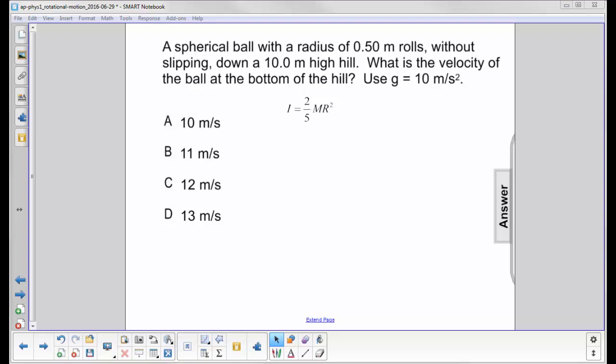A spherical ball with a radius of 0.50 meter rolls without slipping down a 10 meter high hill. What is the velocity of the ball at the bottom of the hill? Use g equals 10 meters per second squared. The moment of inertia of a sphere is 2 fifths mr squared.